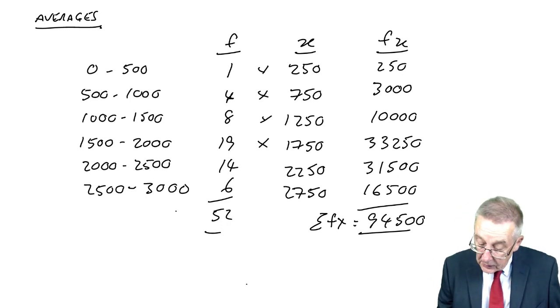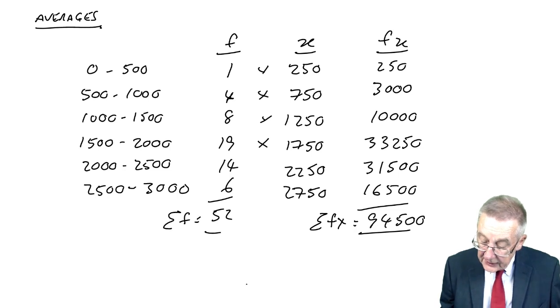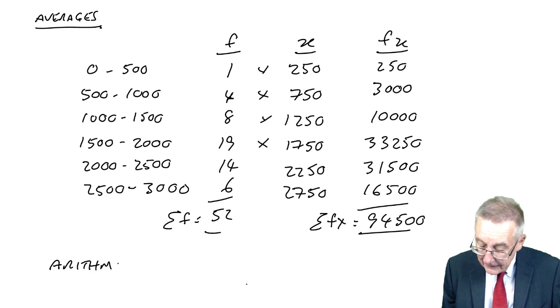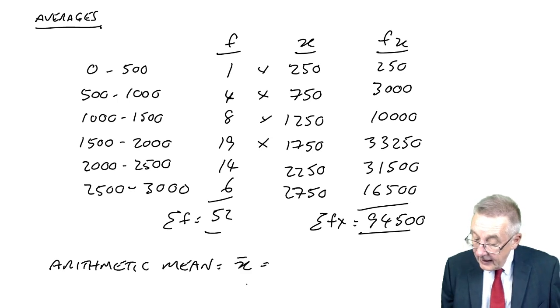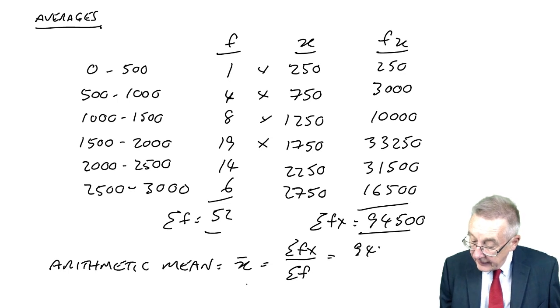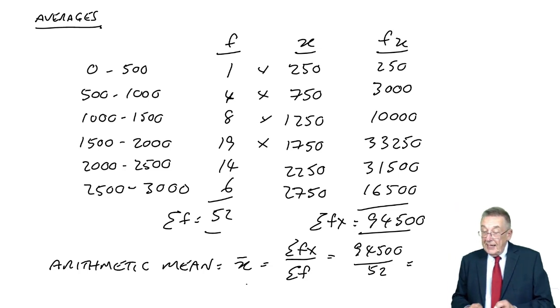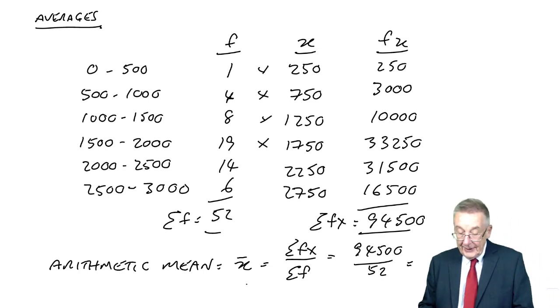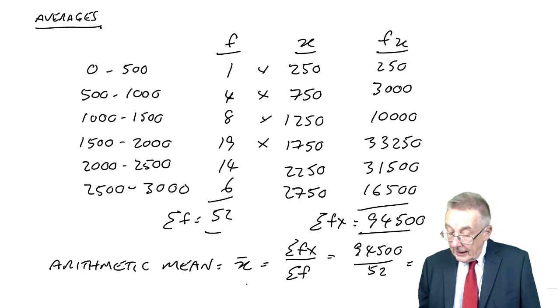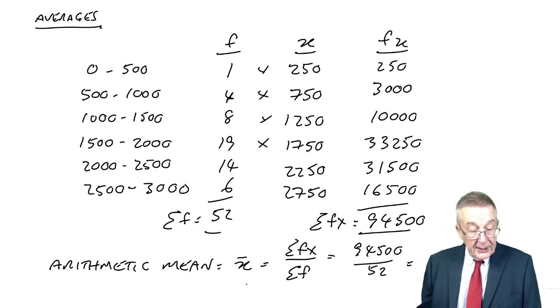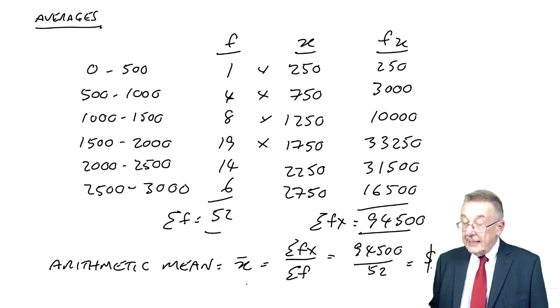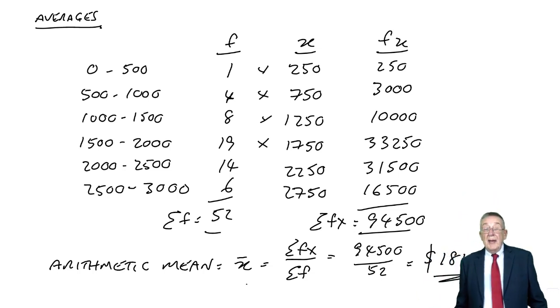Sigma F, the total number of observations is 52. And so the arithmetic mean, or X bar, equals sigma FX over sigma F: 94,500 divided by 52 gives me 1817. These are all dollars, by the way. So there's the arithmetic mean.